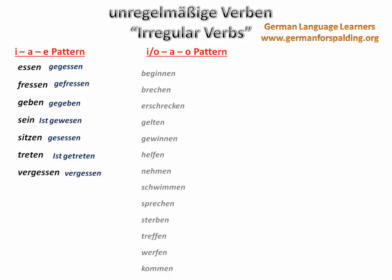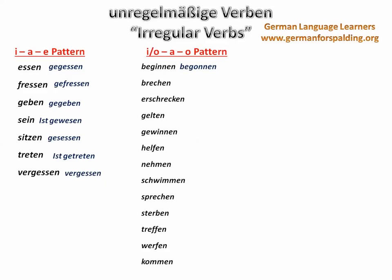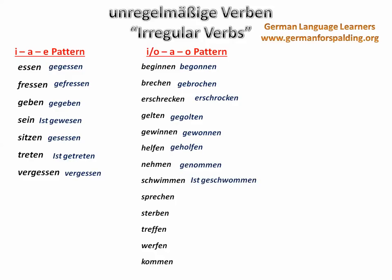Group 2 past participles, changing to an O: beginnen → begonnen; brechen → gebrochen; erschrecken → erschrocken; gelten → gegolten; gewinnen → gewonnen; helfen → geholfen; nehmen → genommen; schwimmen → geschwommen; sprechen → gesprochen; sterben → gestorben; treffen → getroffen; werfen → geworfen; kommen → gekommen.